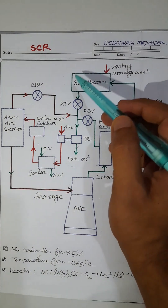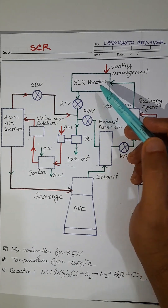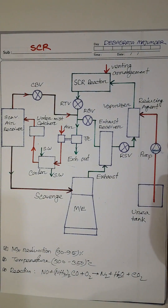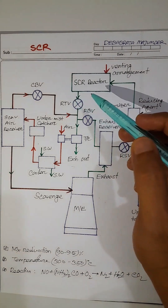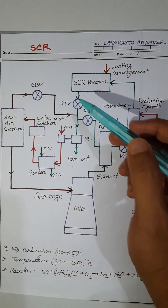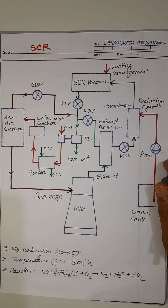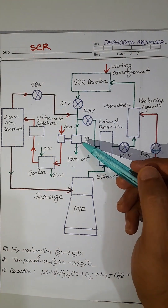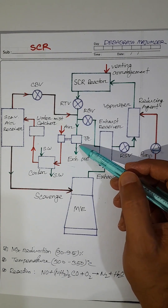Soot blow arrangement is also fitted, which is not shown here. Soot blow arrangement is done to prevent the contamination of reactor element. Soot blow is done by the compressed air of 7 bar. Here you can see the turbocharger, which receives exhaust gas.